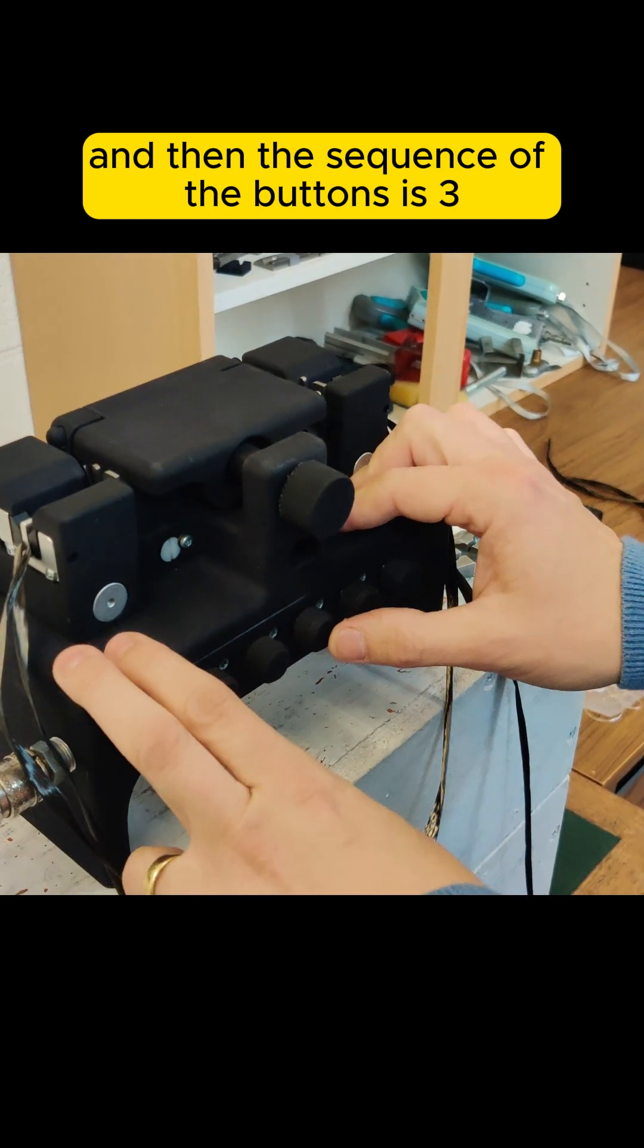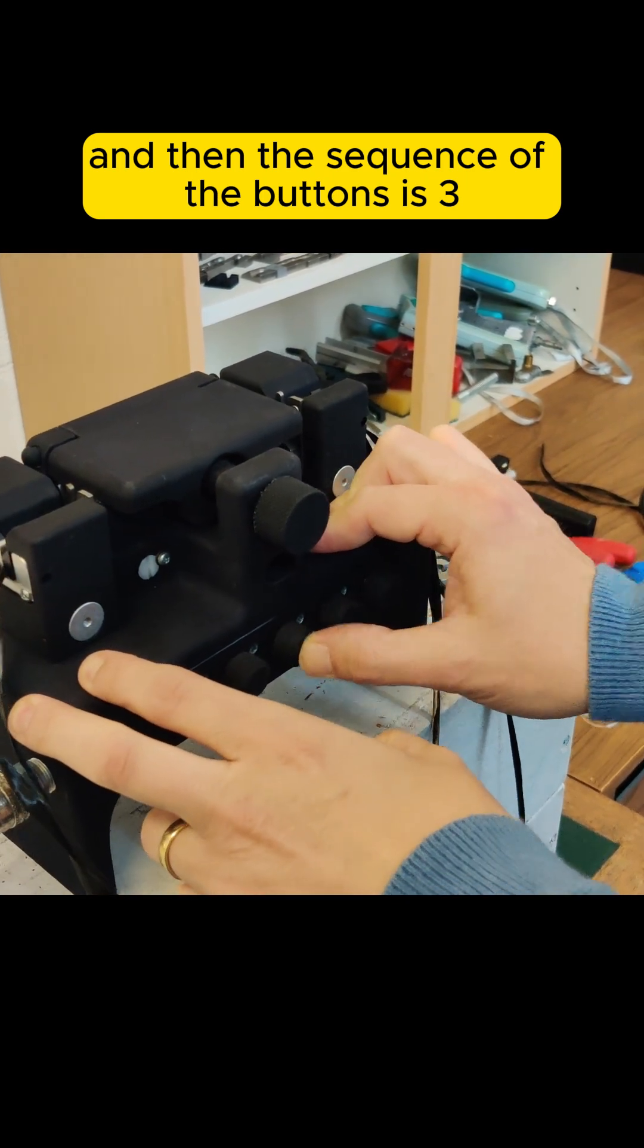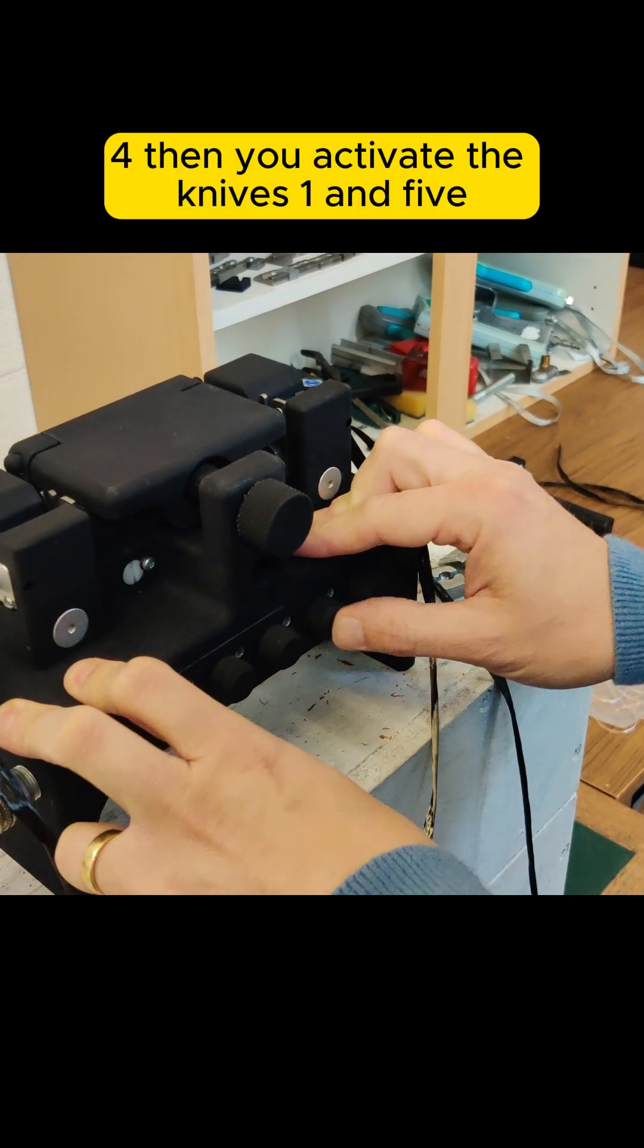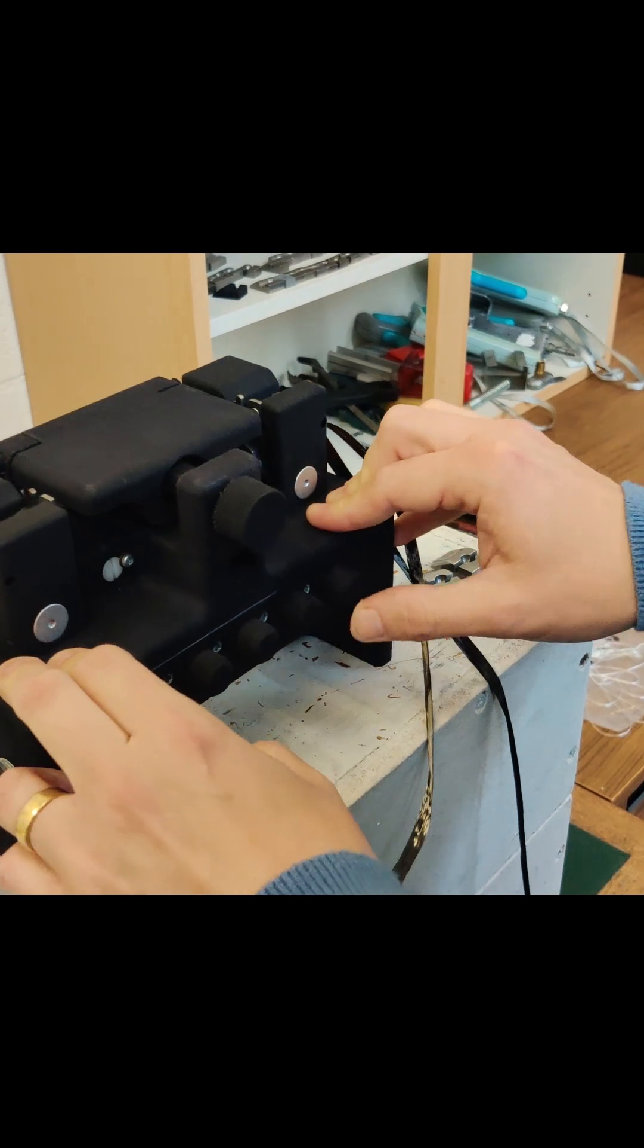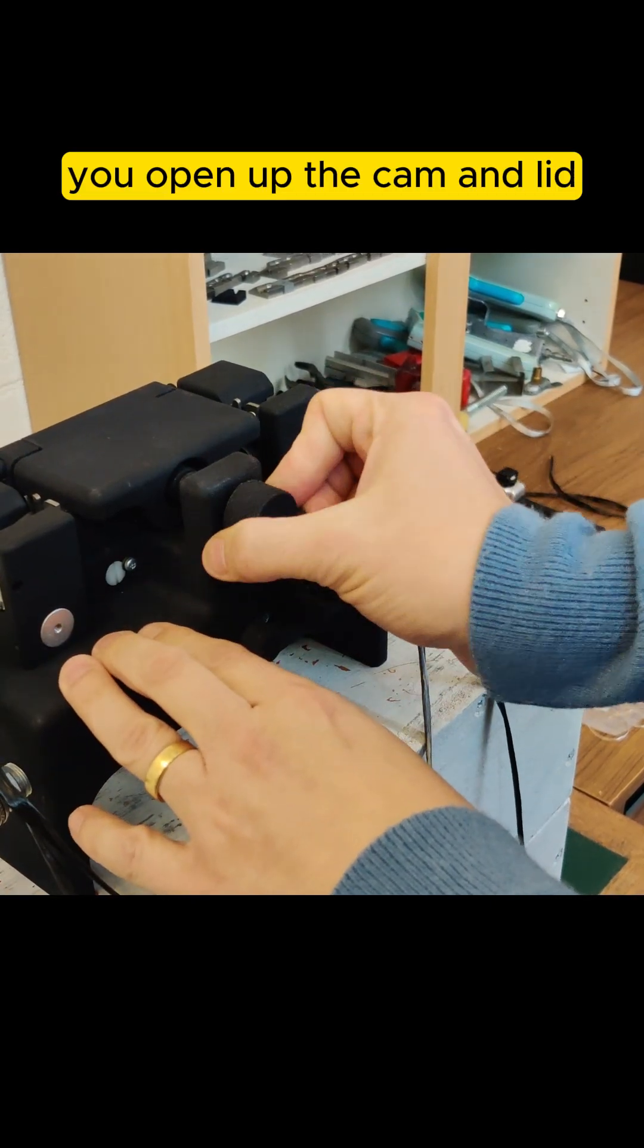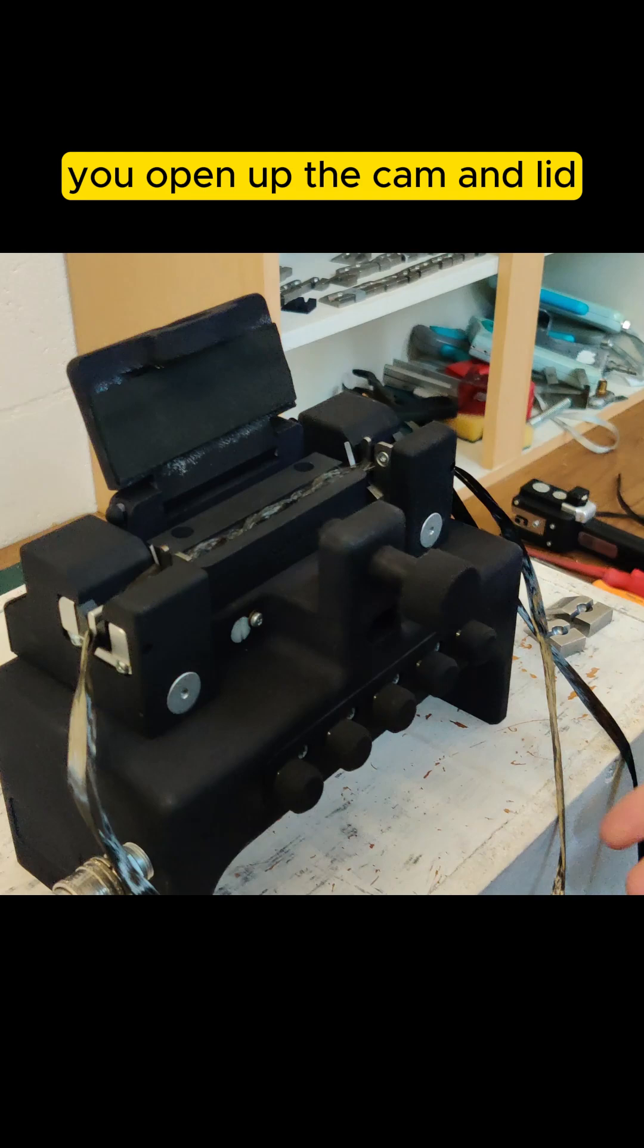Then the sequence of the buttons is you activate the knives one and five, you open up the cam and lid.